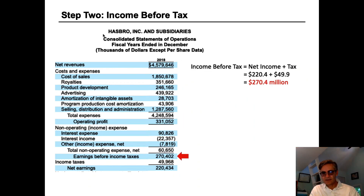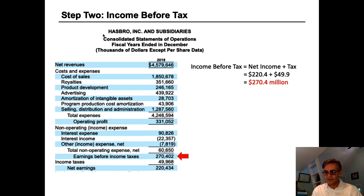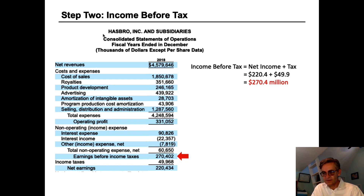Step two is to find the company's income before tax, sometimes called profit before tax, earnings before tax, or abbreviated as PBT or EBT. Hasbro makes it easy, as it's clearly labeled as earnings before income taxes at $270.4 million in 2018. If it's not given, it's simply net income plus tax. In Hasbro's case, we add tax expense of $49 million to net income of $220.4 million to arrive at $270.4 million.